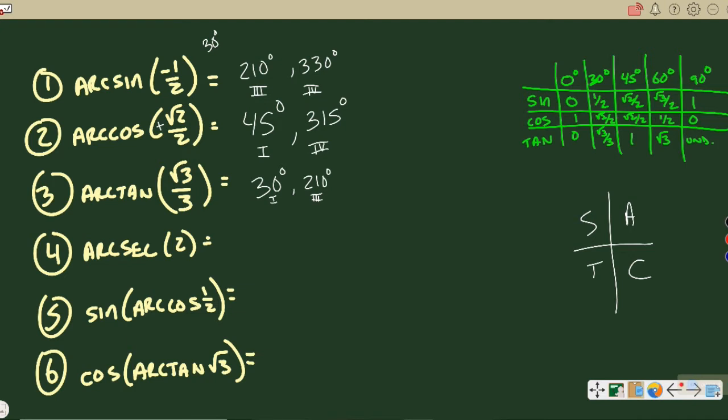This last one, arc secant of two. Well, we don't like secant, it's not in that chart over there. So we're going to have to switch it around to arc cosine. So instead of saying when secant equals two, that's the same as saying when does cosine equal one half. Cosine of 60 is equal to one half, and that's the quadrant one answer. The other one for cosine is quadrant four, so 300.